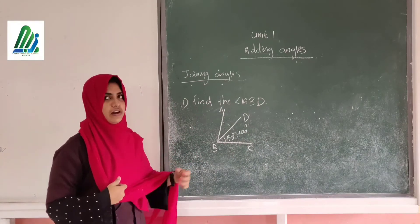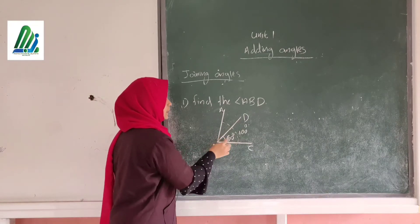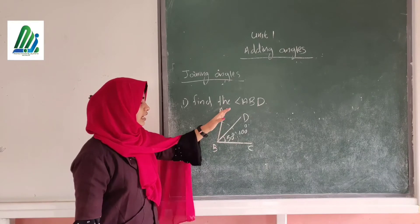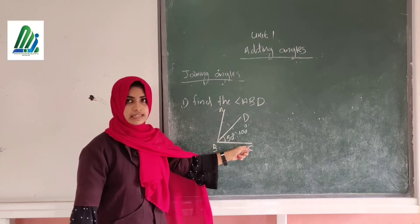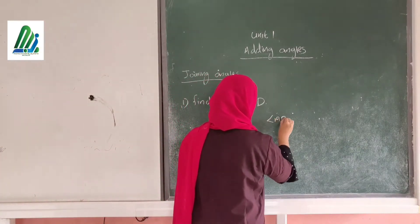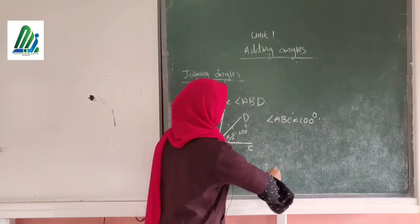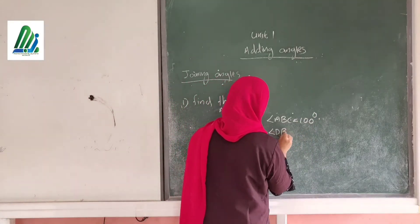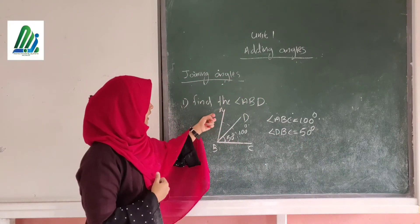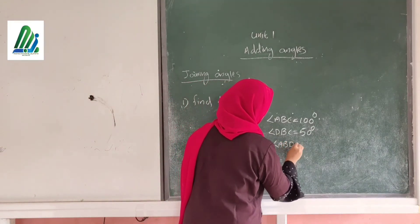So this is the question. Here, we want to find the angle ABD. Here, the angle DBC is given 50 degrees. The total angle, the large angle ABC is given 100 degrees. We want to find angle ABD.